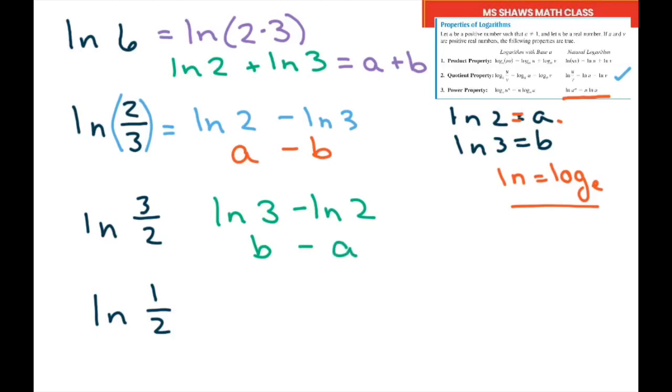And this last one, I have ln of 1 minus ln of 2. So ln of 1 is 0 minus ln of 2 is a. So my answer is negative a. Don't forget that ln of 1 equals 0 because e to the 0 equals 1.